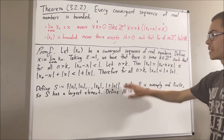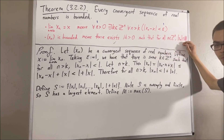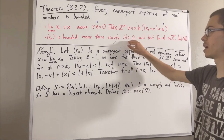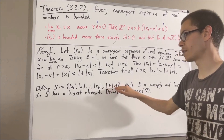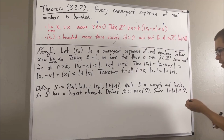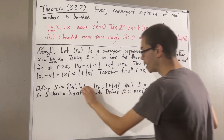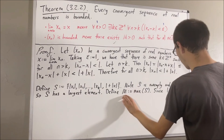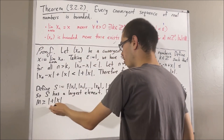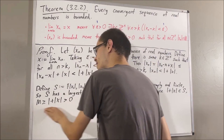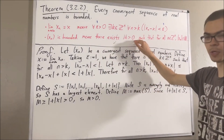We'll call the largest element of S capital M. Our claim is that M is a positive real number and makes the boundedness statement true. To see that M is positive: since 1 plus the absolute value of x is an element of S and M is the largest element of S, M is greater than or equal to 1 plus the absolute value of x. Since 1 plus the absolute value of x is greater than 0, we conclude that M is greater than 0, so M is a positive real number as required.